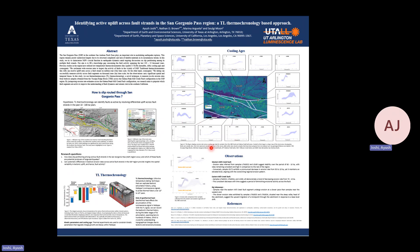Figure 4 represents cooling age versus erosion rate plots. It provides a direct comparison of erosion rates from our sample locations, and visually shows the spatial variability in erosion and, by extension, the tectonic activity spread across different fault strands in the study area. Our study primarily focused on the Galena Peak fault and the Mill Creek fault configuration, where we observe distinct erosion patterns along the western and eastern segments. Samples near the eastern Mill Creek fault segment undergo erosion at a slower pace than samples near the western end. The slow erosion rates along the eastern segment, situated near the steep valley head of the catchment, suggests an upward migration of nick point in response to a base level shift.